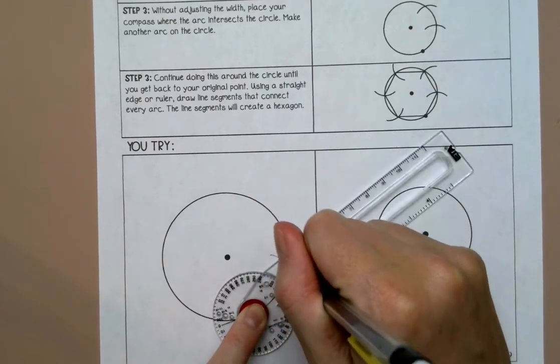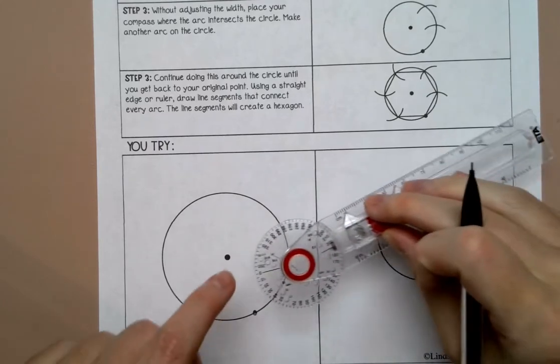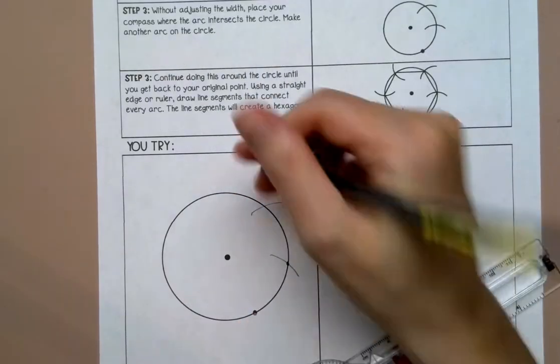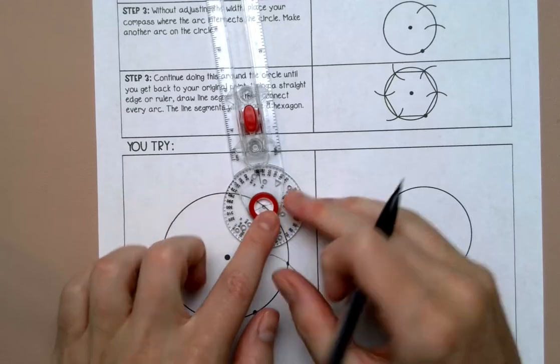And I'm going to draw an arc. And then I'm going to move up to that arc and draw another arc. And then I'm going to do that all the way around the circle.